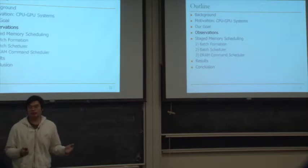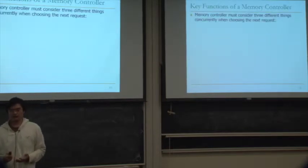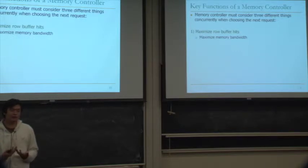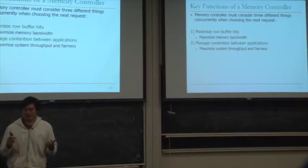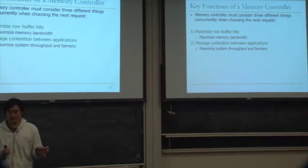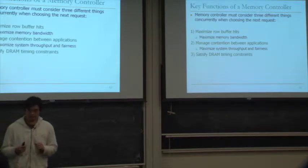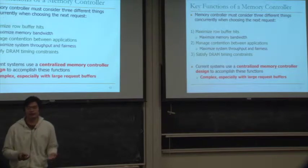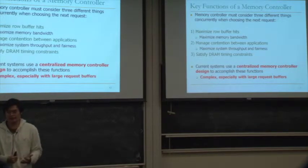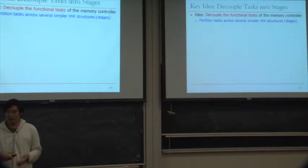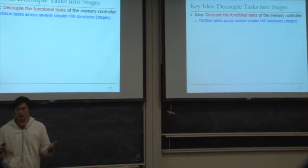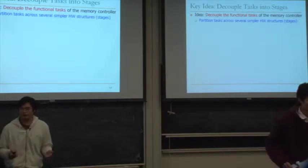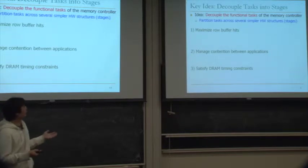To address our goal, we make several observations. The memory controller must simultaneously consider three things when choosing the next request: maximizing row buffer hits to maximize bandwidth, managing contention between applications for throughput and fairness, and satisfying DRAM timing constraints. Current designs accomplish all three in a centralized controller, which can be complex with large request buffers. Our key idea is to decouple these functional tasks into different stages and partition them across several simpler hardware structures.